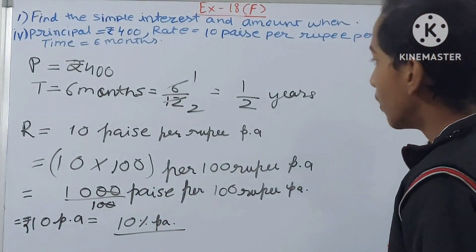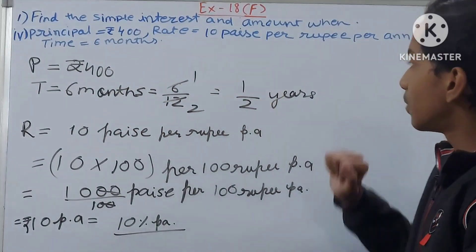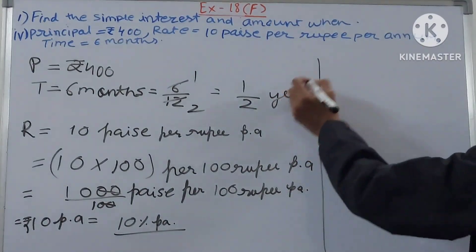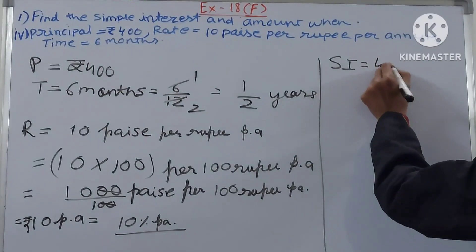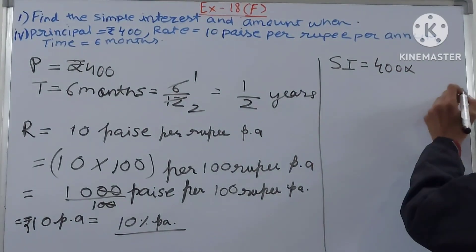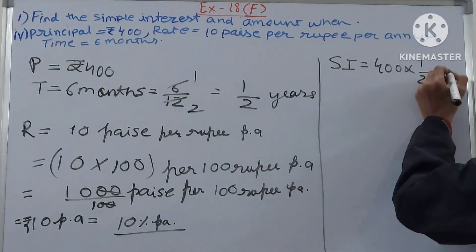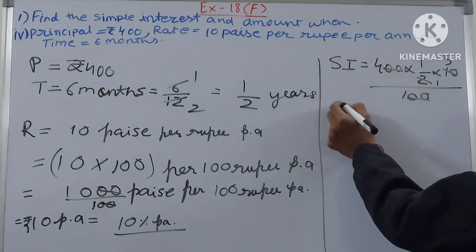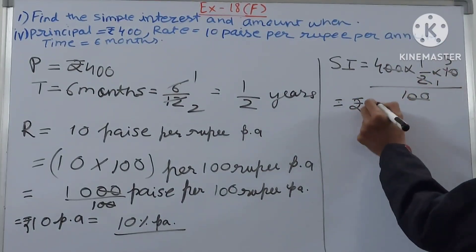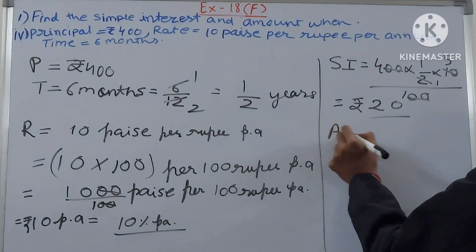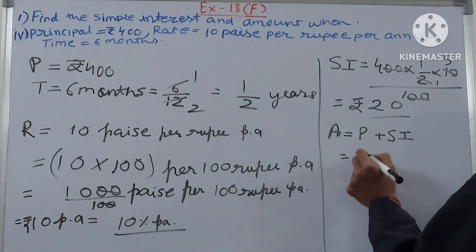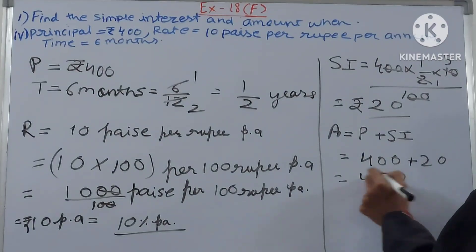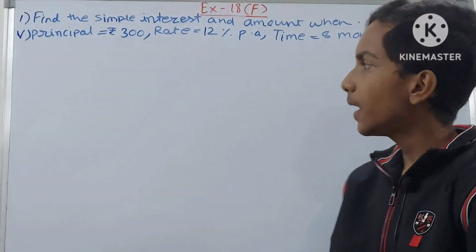Now: rate = 10%, time = 1/2 year, principal = 400. SI = 400 × (1/2) × 10 ÷ 100. Cancelling, we get 4 × 5 = rupees 20. Amount = P + SI = 400 + 20 = rupees 420. So SI is rupees 20 and amount is rupees 420.